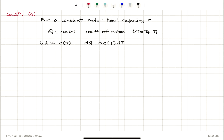This dQ does not mean Q_final minus Q_initial — it's the amount of heat, because Q is not a state variable, it's a transfer variable. Heat is a transfer variable. In an advanced thermodynamics class, this would be written as đQ (d-bar Q) to indicate that difference, but we'll keep it as dQ for now.